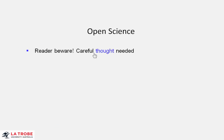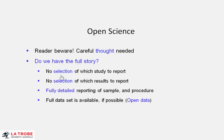So open science first alerts us that the reader has to beware. Our careful thought is needed as we consider any research result. And the best way to summarise this is with the slogan: do we have the full story? Having the full story means no selection of which study we're told, no selection of which results out of a particular study have been reported. So we need fully detailed reporting of everything to do with the procedure, the sample, and preferably the full data. Then second, as well as having the full story of this study, we need replication. Only then can we build our confidence in some finding.